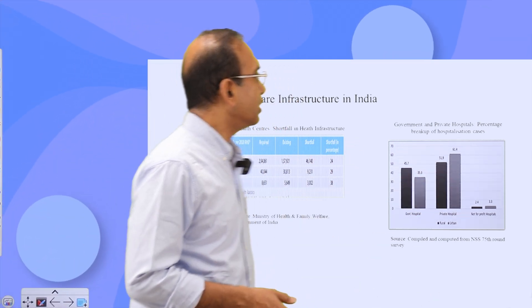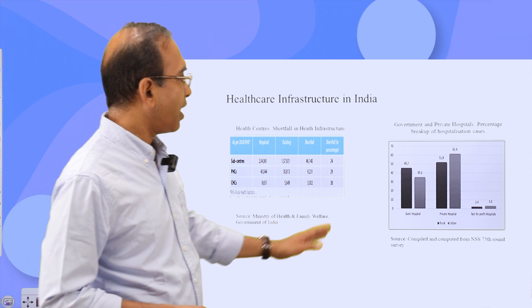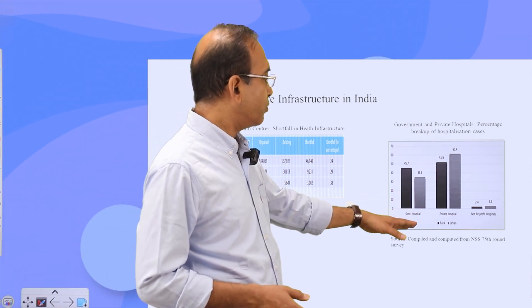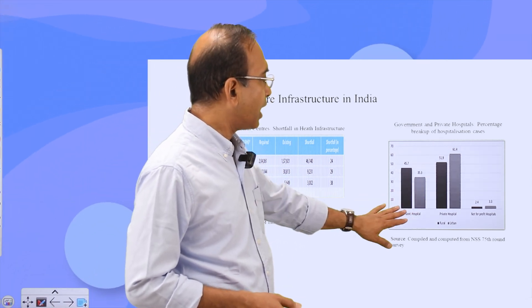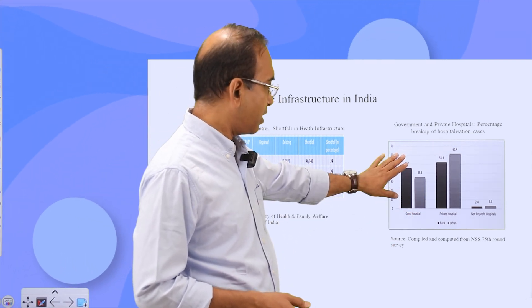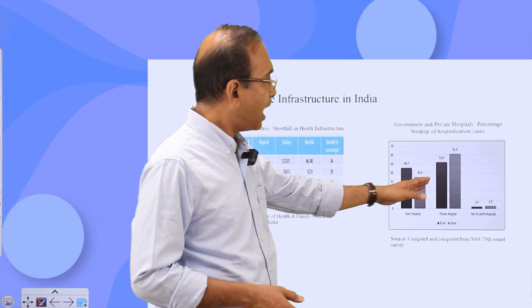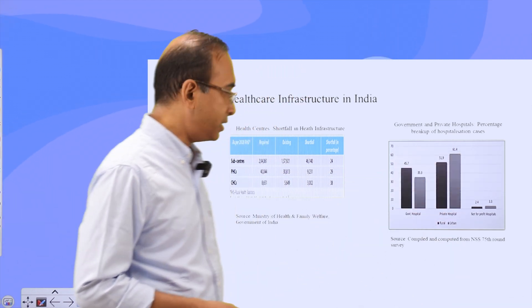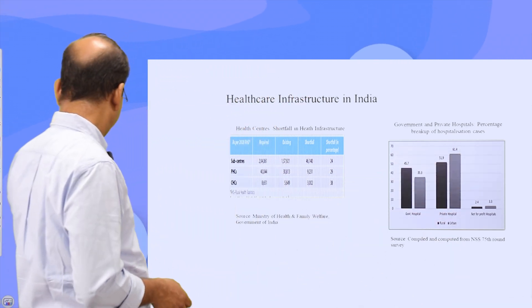If we look at government and private hospitals, in rural India government hospitals are more prevalent and private hospitals are fewer, whereas in urban areas it is the opposite.